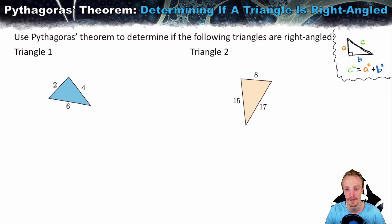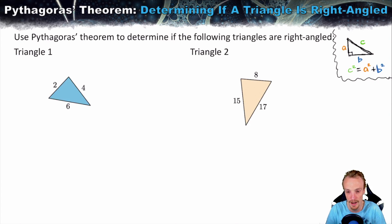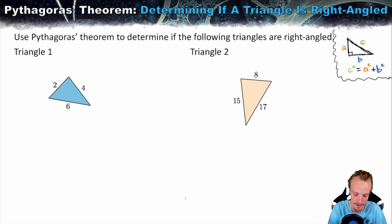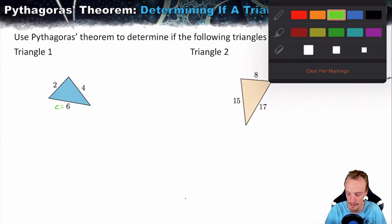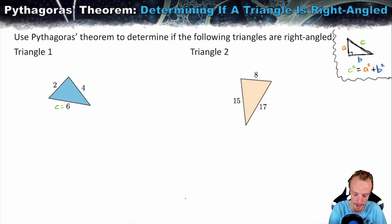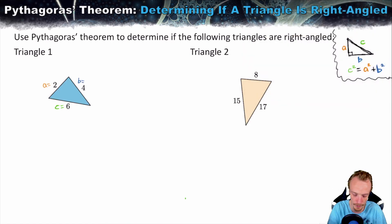We follow a simple step-by-step process. The first step is to label our triangle. The longest side has to be C — if the triangle is right-angled, C is the hypotenuse. The two shorter sides can be labeled A and B in either order.